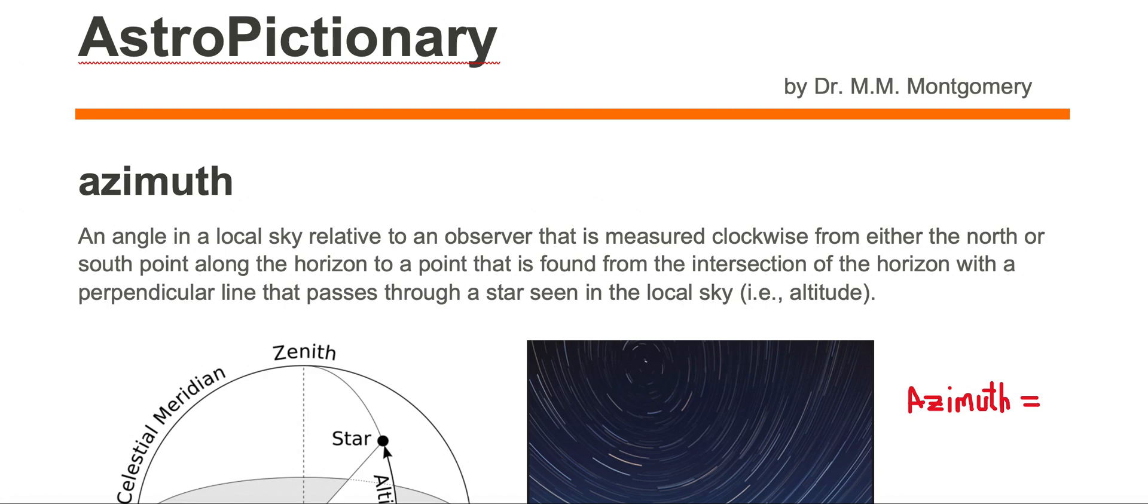Azimuth is an angle in a local sky relative to an observer that is measured clockwise from either the north or south point along the horizon to a point that is found from the intersection of the horizon with a perpendicular line that passes through a star seen in the local sky, or in other words, the altitude.